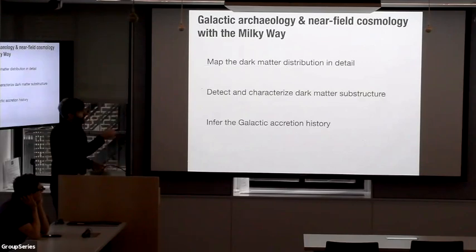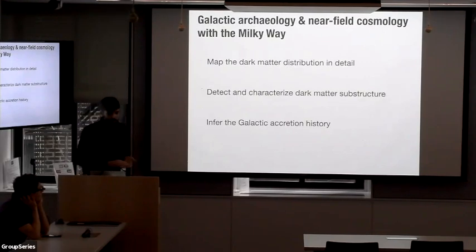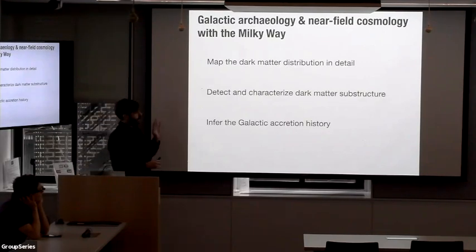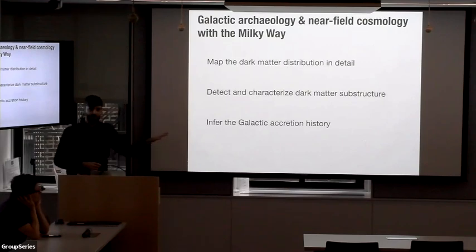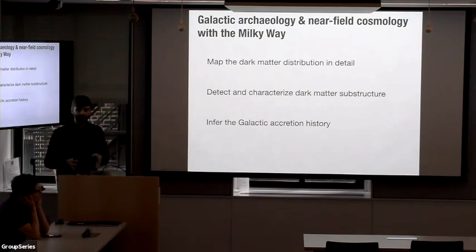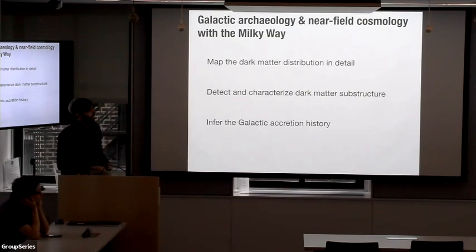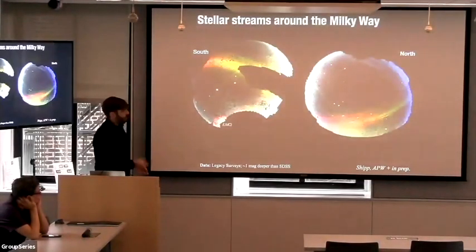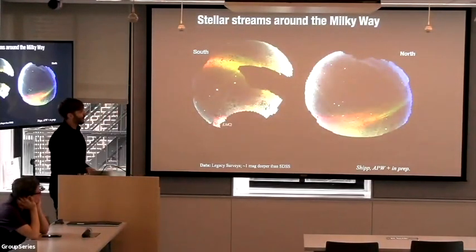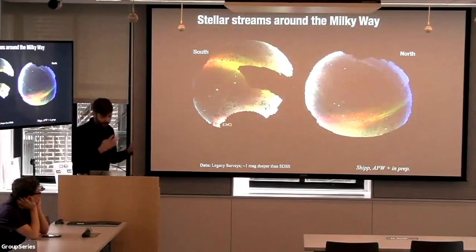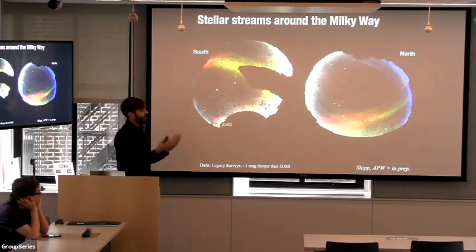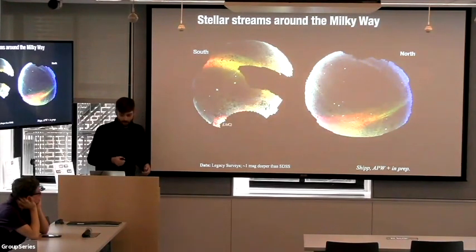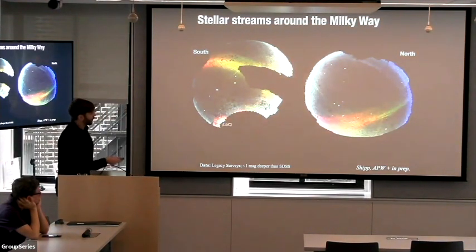I'll go into more detail on each of these goals, but I really want to talk about how we can make progress on all of them using one particular type of tracer that I love — stellar streams. Here's a map of the Milky Way halo: blue things are closer, green things are at intermediate distances, red are much farther away.